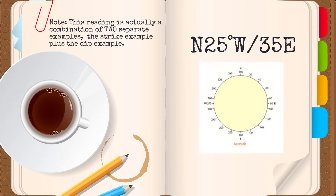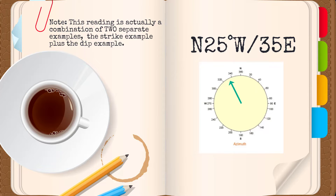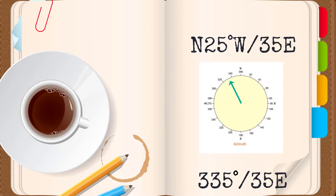Some of you may be using an azimuth compass where you are simply reading the bearing in degrees. In this case, you would just take 25 degrees from 360 degrees, and it would be written as 335/35E.